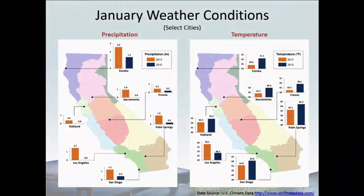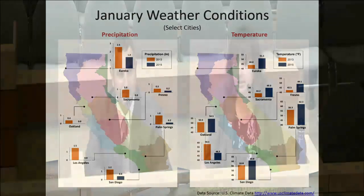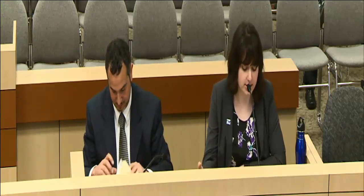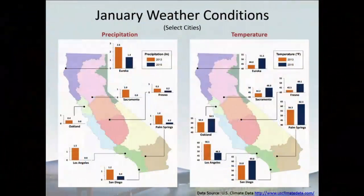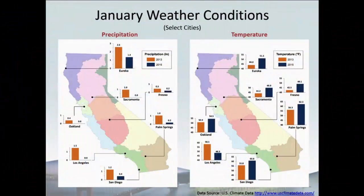Katie Landau thanked Max and began her presentation by emphasizing the difference in climate between January and December. Over the months they've been collecting data, they've seen a correlation between climate and water conservation levels — when it's been wetter they save more water, and when drier, levels are lower. December was a very wet month and also saw their greatest water conservation levels to date: 22 percent statewide. The highest savings were achieved in areas that were both wet and cool.